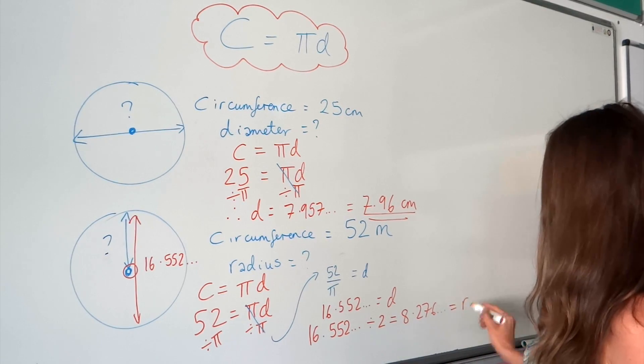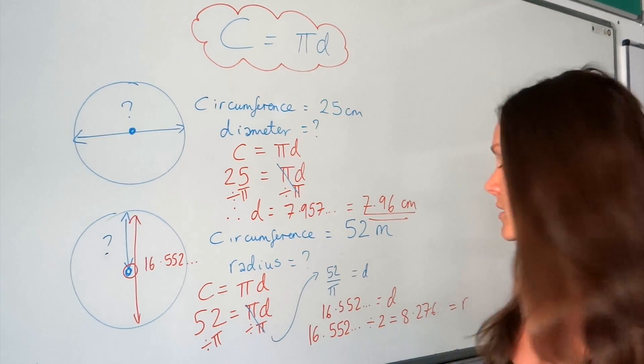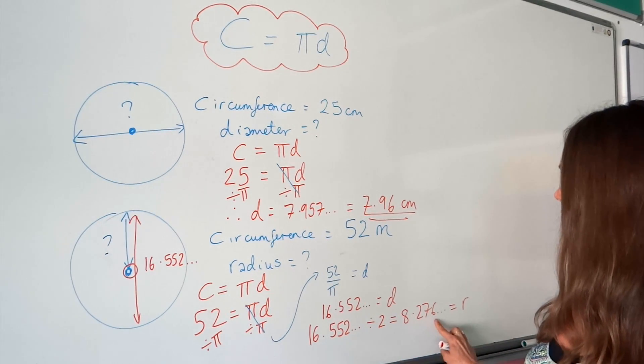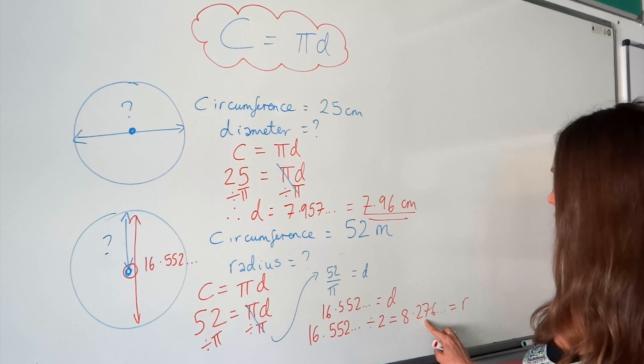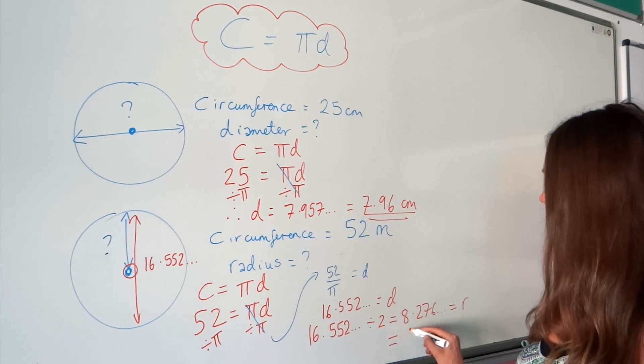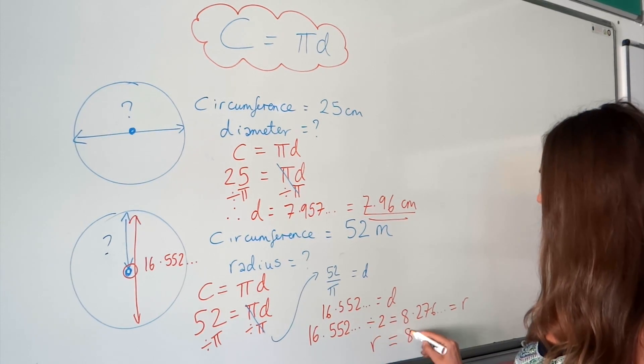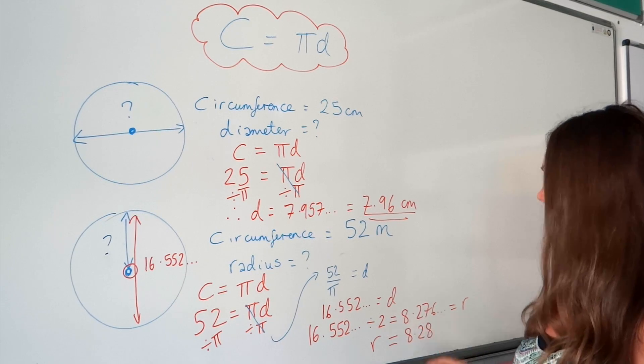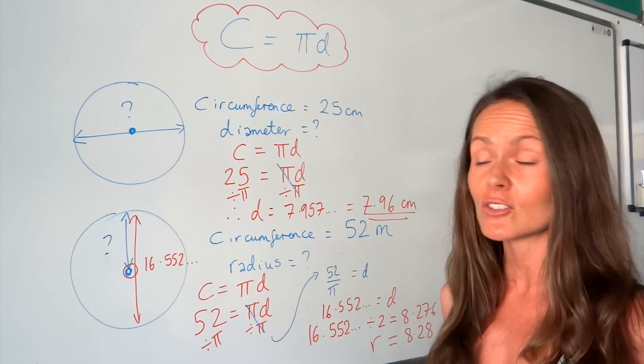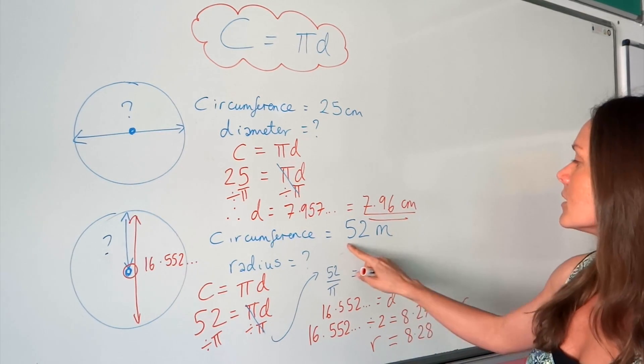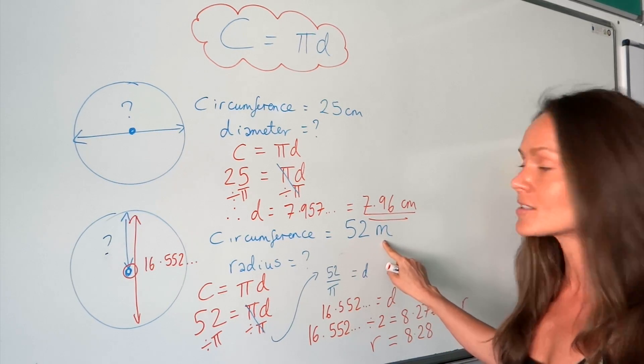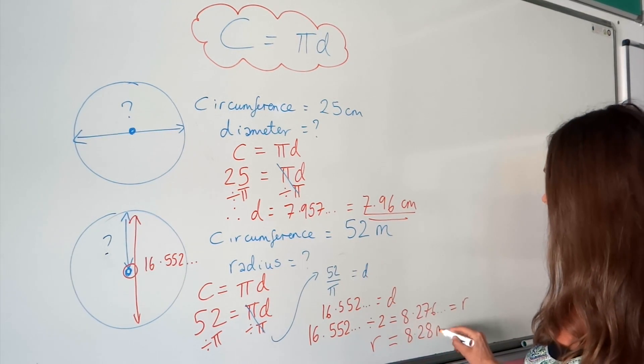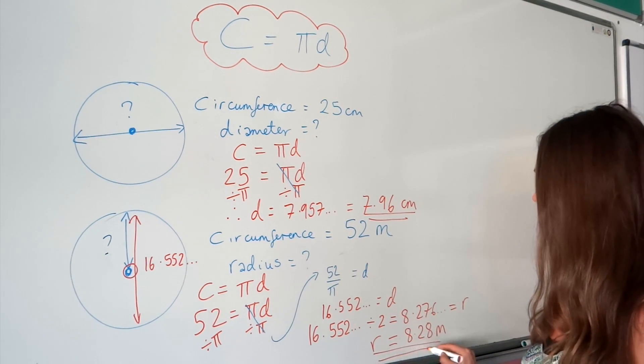To finish, I'm going to round that answer to 3 significant figures. So 3 numbers: 1, 2, 3. The 6 rounds that 7 up to 8. So my final answer for r is 8.28. Be careful, the units have changed on this question. This time, the circumference was given in meters, so our radius is also in meters.